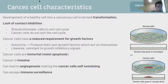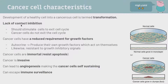Cancer cell characteristics. The development of a healthy cell into a cancer cell is called transformation. Cancer cells lack contact inhibition - normally when a cell reaches the end of a petri dish it stops growing, but cancer cells don't. They just continue through the cell cycle without those regulatory hormones. Cancer cells have a reduced requirement for growth factors, meaning they don't rely on the body telling them to grow. Rather, they're autocrine and produce their own growth factors which act on themselves. Conversely, they're also resistant to growth inhibitory signals - they can't be told to stop and they make their own growth factors.